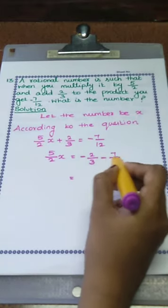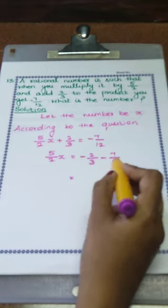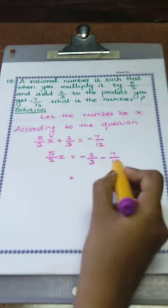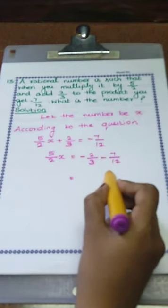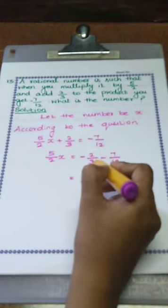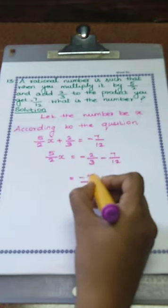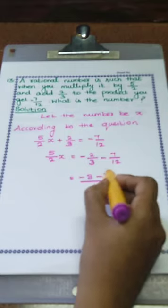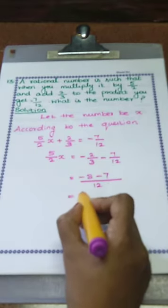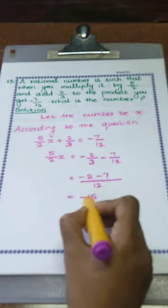We want to add the values 2 by 3 and 7 by 12, but the denominators are different. So we have to convert to the same denominator. The LCM of 3 and 12 is 12. We multiply the numerator and denominator of 2 by 3 with 4, giving minus 8 by 12. Then minus 8 minus 7 by 12. Adding 8 plus 7 gives 15, and the common sign is minus, so we get minus 15 by 12.